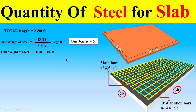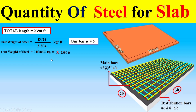Now dear students, to calculate the total weight of the main bars and distribution bars, as you can see the total length of main and distribution bars combined is 2390 feet. I will multiply this by the unit weight of the Number 6 bar, which gives the total weight of the steel as 1626 kg.